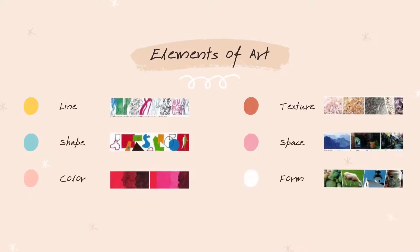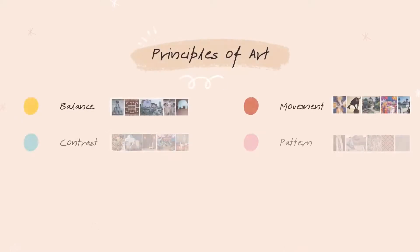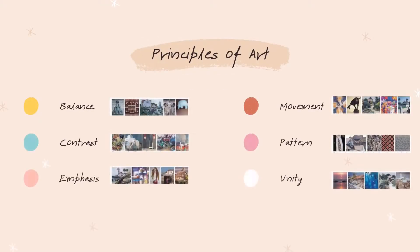The elements of art are line, shape, color, texture, space, and form. The principles of art are balance, contrast, emphasis, movement, pattern, and unity.